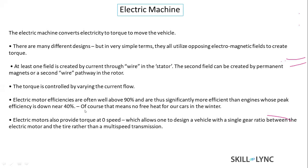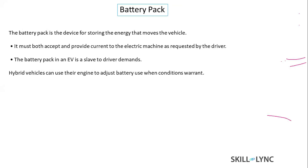Another advantage of electric motors is that they can produce torque at zero speed, which allows the use of a single-speed transmission. Conventional vehicles require five-speed manual or AMT transmissions with different gear ratios. But because of the torque-speed curve that the electric motor produces, a multi-stage transmission is not needed — a single-speed transmission is sufficient to power the wheels.